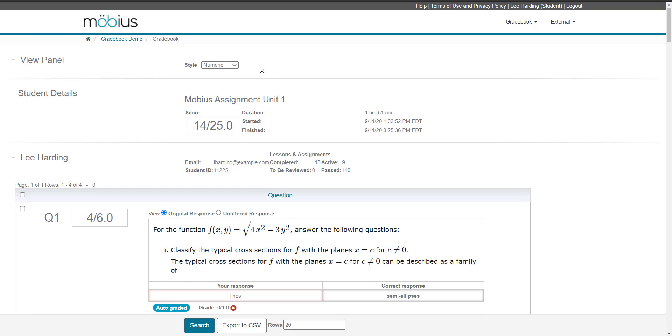First is the view panel where you can from the style drop-down menu select how you want your grade to be displayed. You can choose from the default numeric or choose percentage and letter. Remember that if you do choose something other than the default value you'll then have to click search. This will then refresh the results that are shown on this page.